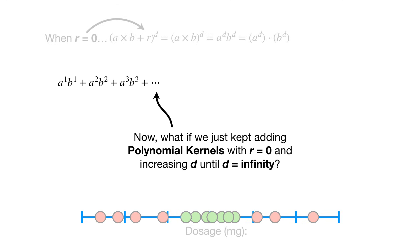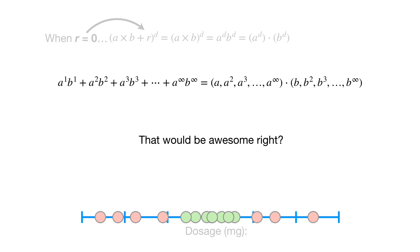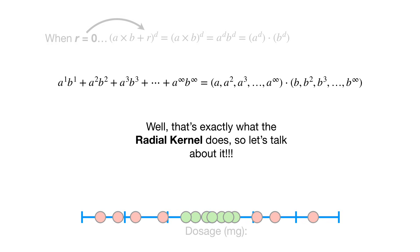Now, what if we just kept adding polynomial kernels with r equals 0 and increasing d until d equals infinity? That would give us a dot product with coordinates for an infinite number of dimensions. That would be awesome — and that's exactly what the radial kernel does, so let's talk about it.